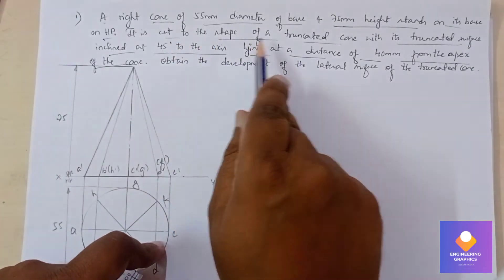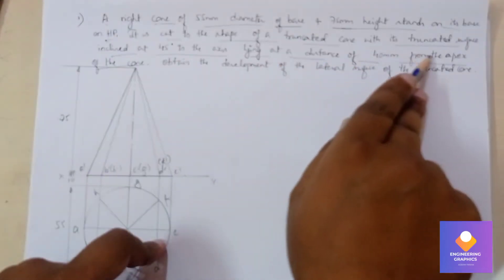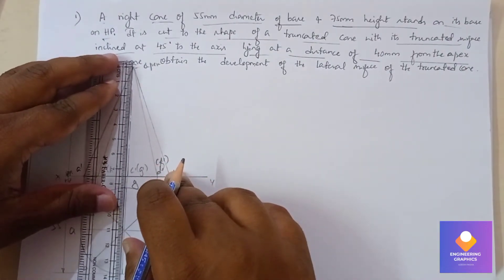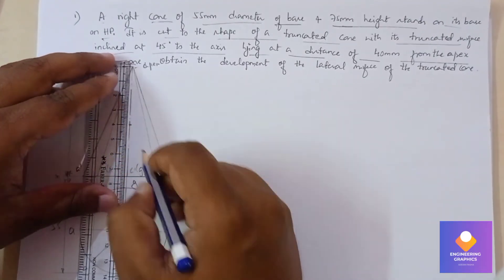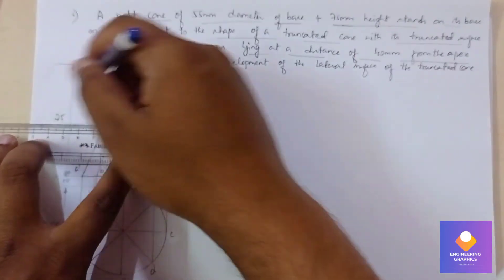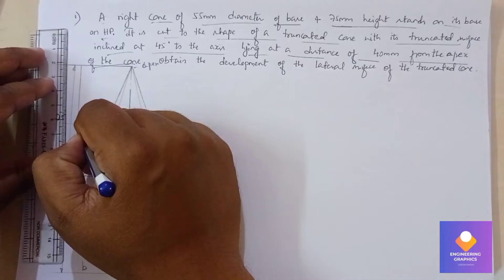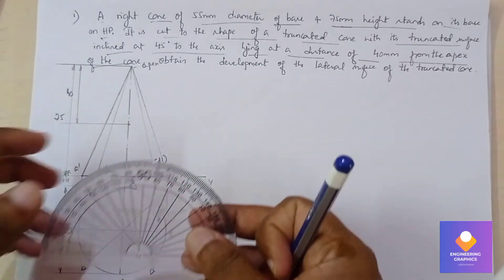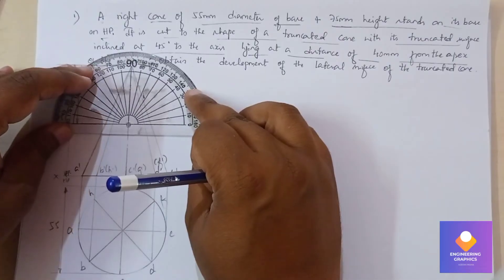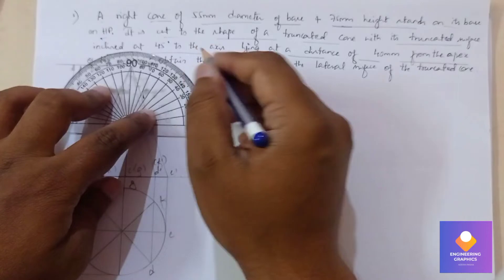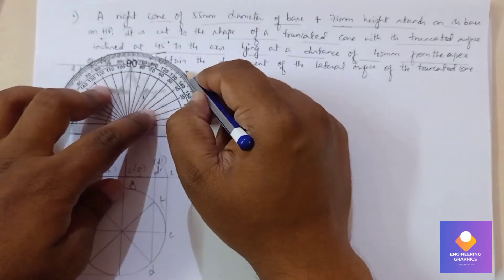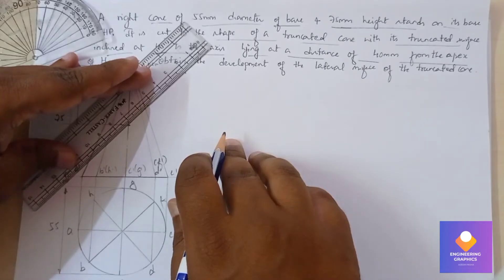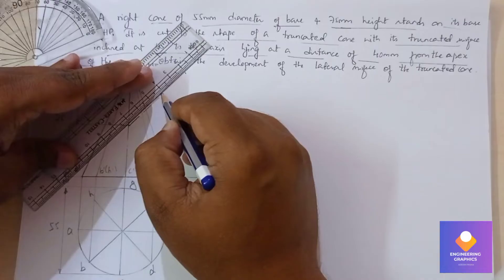Consider a section plane on the axis at an angle of 45 degrees, measured from the apex at a distance of 40 mm. Keep the protractor there and show the dimension of 40 mm from the apex. Take the protractor, mark the reference point, and mark an angle of 45 degrees.